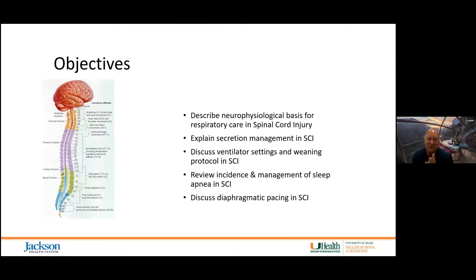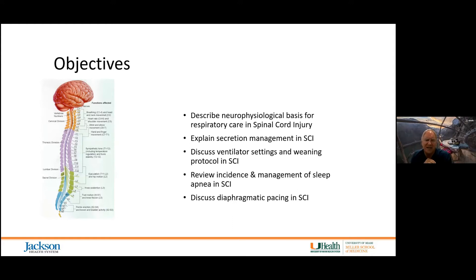We're going to be talking through the neurophysiological basis for respiratory care in spinal cord injury, particularly with regard to the pathophysiology that leads to neurogenic restrictive and neurogenic obstructive lung disease. We'll talk through secretion management, ventilator settings and weaning protocol, sleep apnea after spinal cord injury, and diaphragmatic pacing.